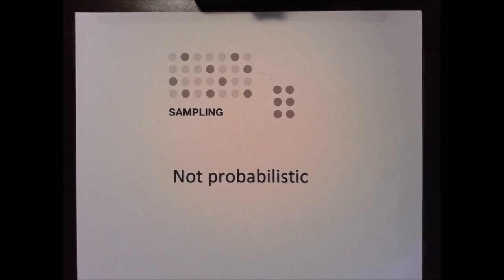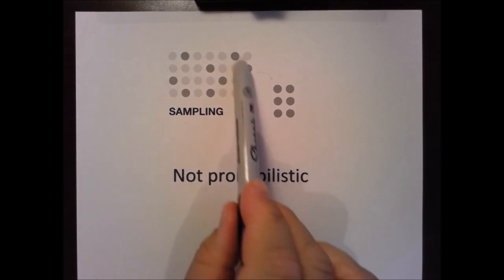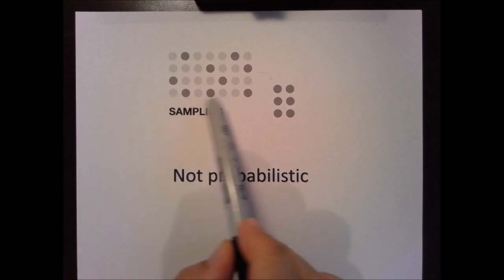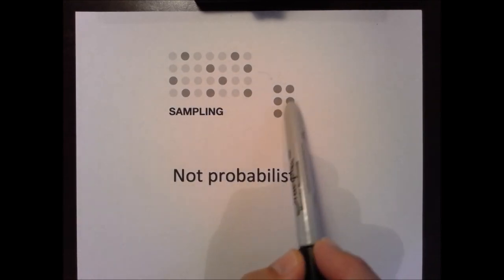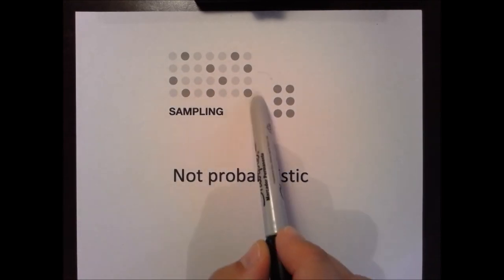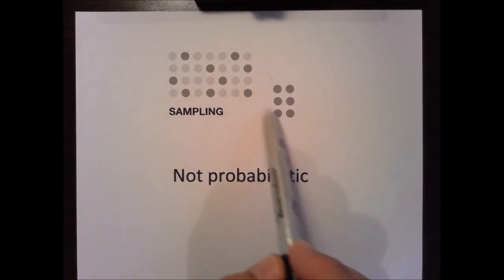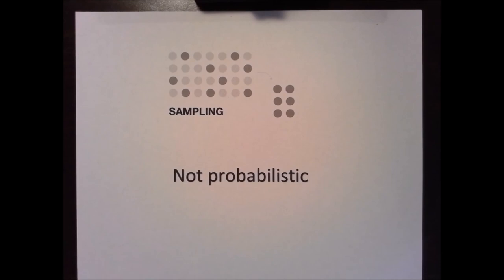The process to get a sample is called sampling. As you can see here in this image, this part represents a population and those parts represent a sample. This sample is part of a population.